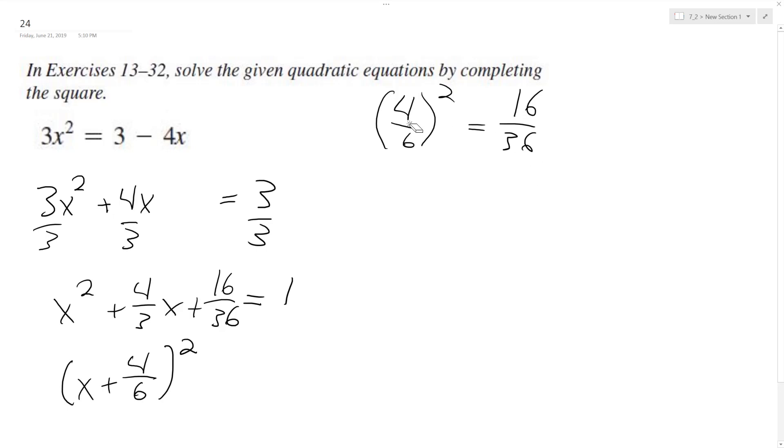Excuse me, 2 thirds squared, 2 thirds squared. I'm sorry, 2 thirds squared is equal to 4 over 9. Yeah, it's still the same thing. It's just simpler. All right, sorry about that.